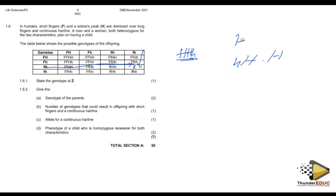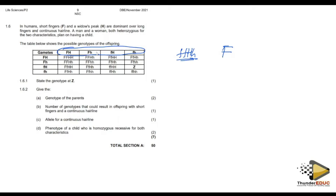Now let's go to the question: give the genotype of the parents. This is a very challenging question, but here's how you can find the parent genotype even when they don't give it to you directly. Look at the gametes — pick a letter which is not yet repeated and write it down. The first one is capital F. Make sure you don't repeat a letter before you've completed the pair, since there are supposed to be two alleles for each character.